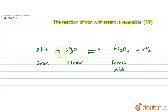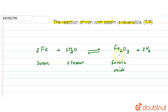Iron reacts with steam to give ferric oxide and dihydrogen. Now, is this reaction reversible? According to the electrochemical series or activity series, iron is more reactive than hydrogen. The standard reduction potential of ferric iron is more than that of hydrogen. Therefore, ferric iron present in ferric oxide gets reduced.